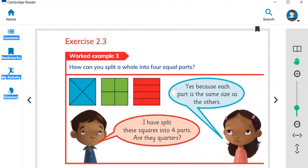Let's look at the first example in exercise 2.3. How can you split, or cut, a whole into four equal parts? So look at this square. I'm going to draw a square here.